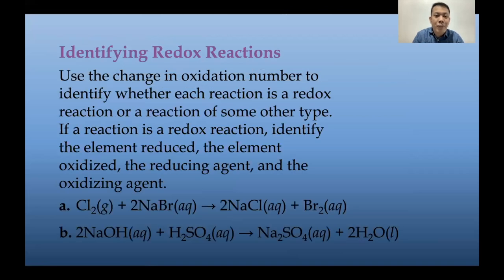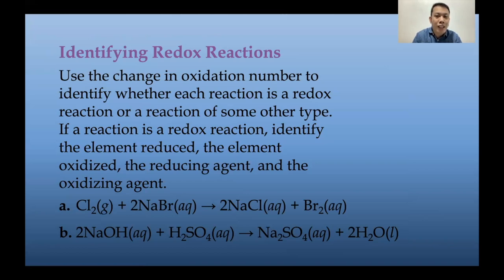Let us now move on to identifying redox reactions. We said there are two classes: redox and not redox. Use the change in oxidation number to identify whether each reaction is a redox reaction or some other type. If there is a change in oxidation number, the reaction is a redox reaction. The element whose oxidation number increases is oxidized and is the reducing agent; the element whose oxidation number decreases is reduced and is the oxidizing agent.